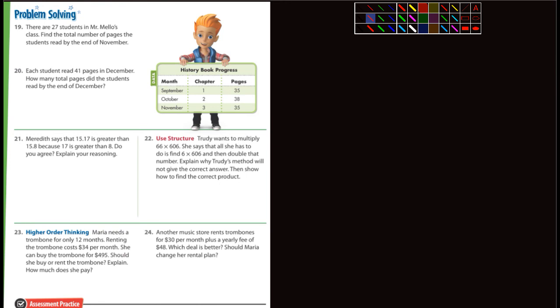There's 27 students in Mr. Milo's class. Find the total number of pages the students read by the end of November. So here's November. It looks like we're going to be talking about these three months here: September, October, November. There's 27 in his class. And so it looks like you're going to add up these three numbers, whatever that is. I'll let you do that. And then you're going to multiply that by 27. That's how you would do that one.